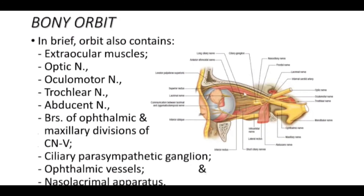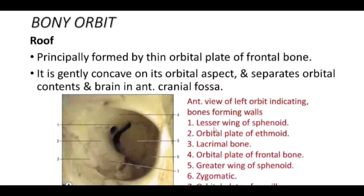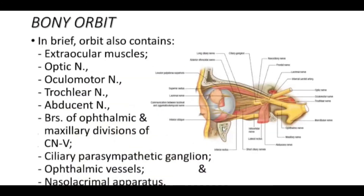The ophthalmic vessels give rise to the supratrochlear, supra-orbital, and infra-orbital arteries, which accompany the branches of the fifth cranial nerve. The nasolacrimal apparatus is also supplied by these nerves.